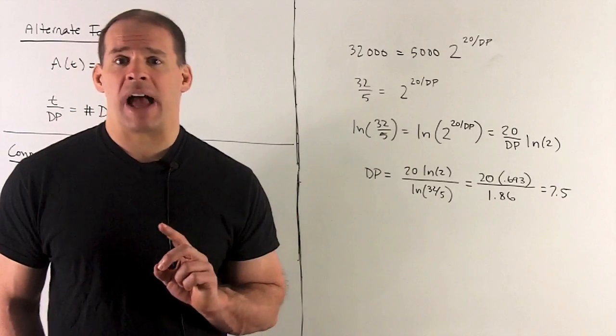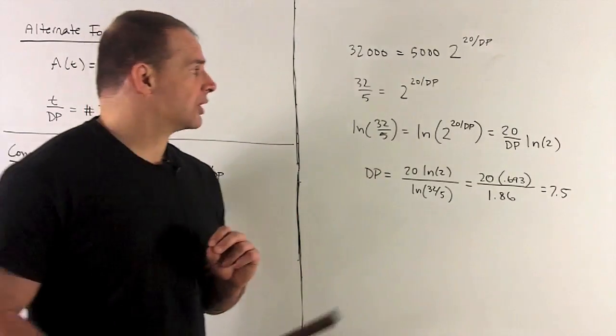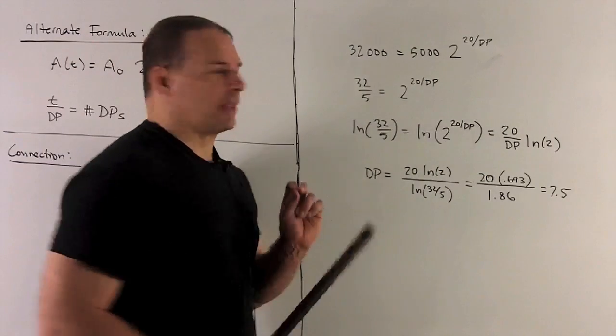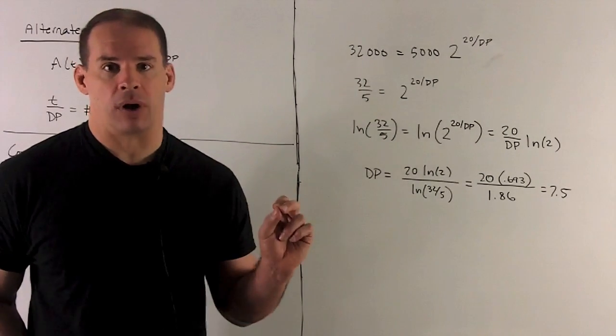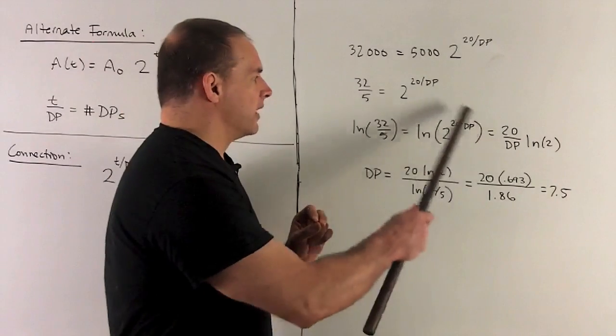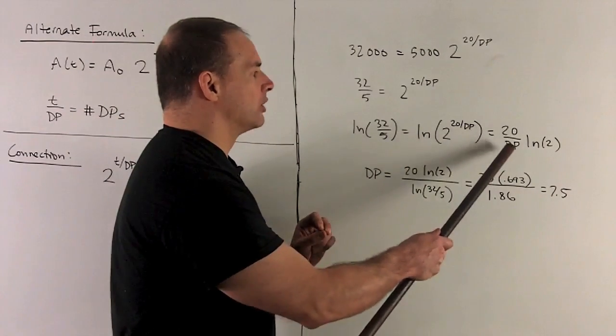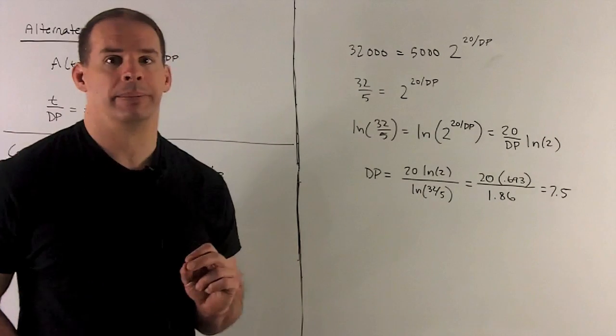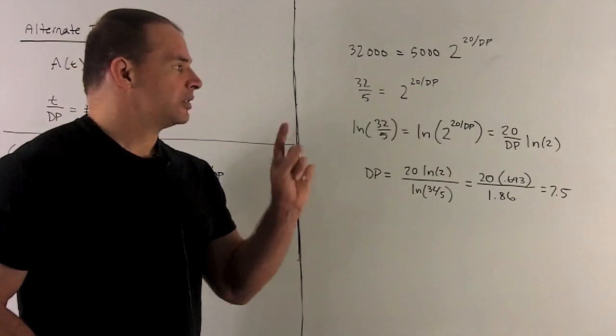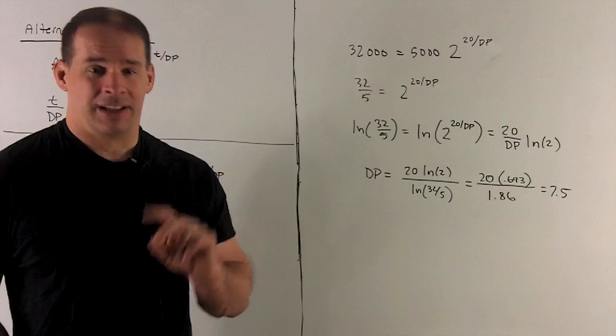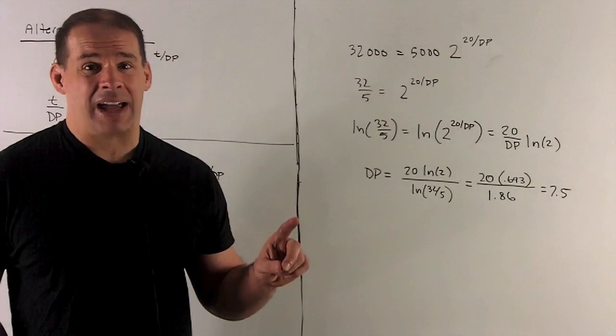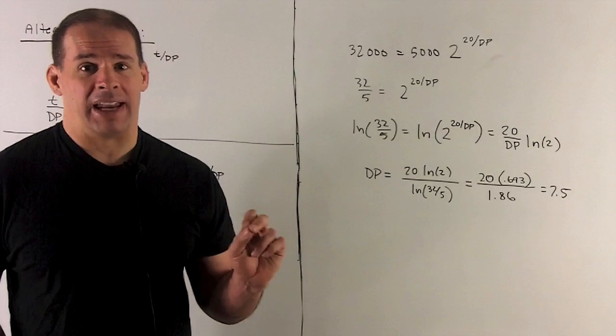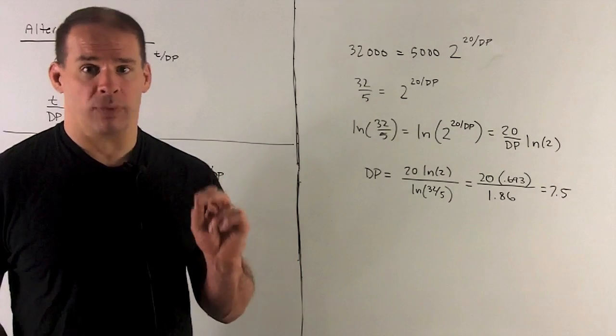What happens? Well, if I have natural log of anything to an exponent, I'm allowed to bring the exponent out to the front. So the way that this gets handled is the 20 over our doubling period goes to the front, and I just have to worry about this natural log of two. At this point, doubling period is outside of the natural log, and now it's just solving using algebra. So we're going to wind up getting our seven and a half all over again.